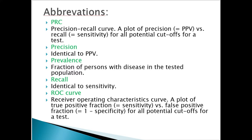PRC stands for precision recall curve — a plot of precision (equal to PPV) versus recall (equal to sensitivity) for all potential cutoffs for a test. Precision is identical to PPV, and prevalence is the fraction of persons with disease in the tested population. Recall is identical to sensitivity. ROC curve stands for receiver operating characteristic curve — a plot of true positive fraction (sensitivity) versus false positive fraction (one minus specificity) for all potential cutoffs for a test.